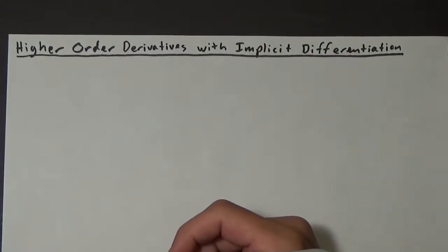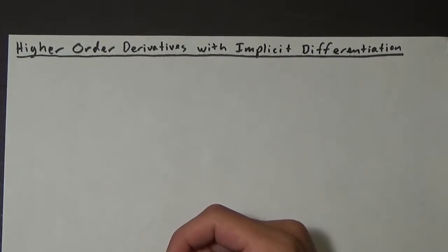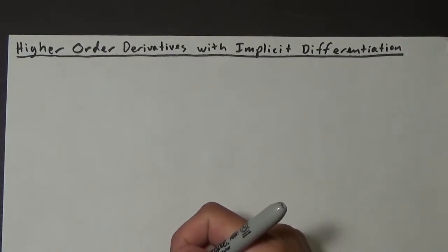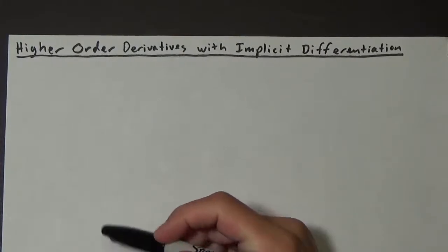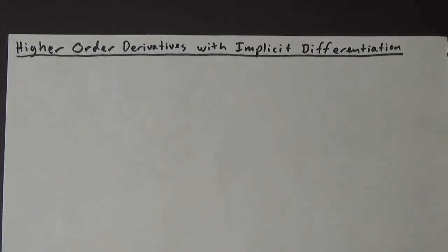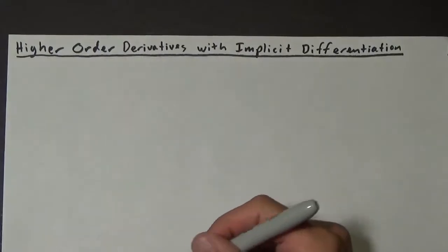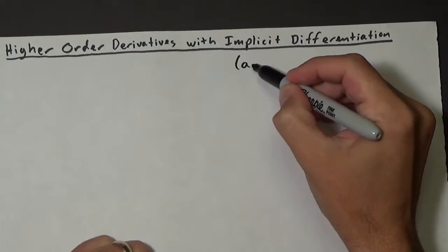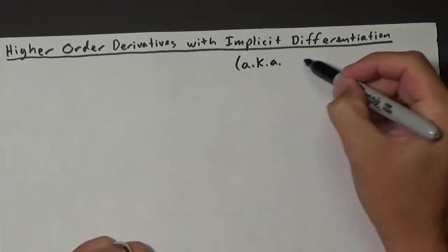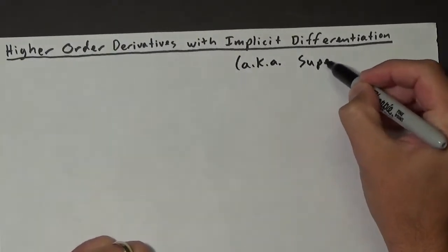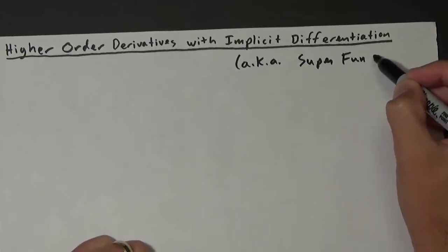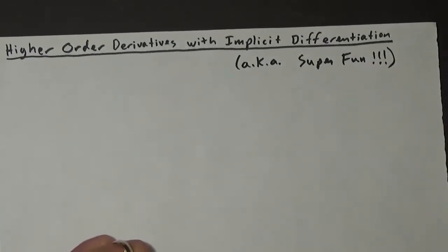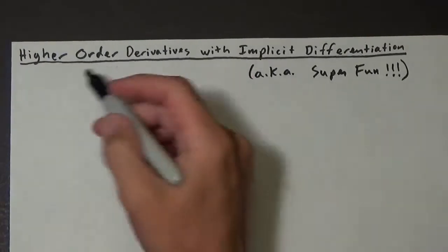In this video we're going to look at how to find higher order derivatives of an equation that is in implicit form. So we're going to have to look at higher order derivatives with implicit differentiation. Alright, let's look at an example.